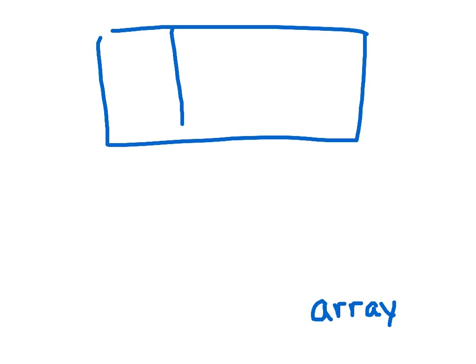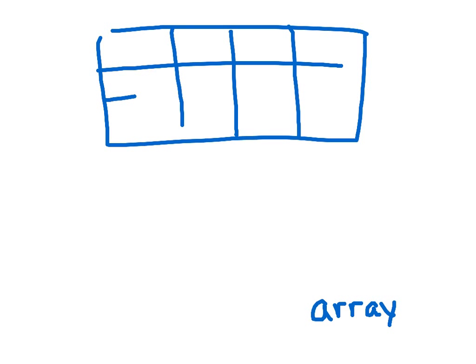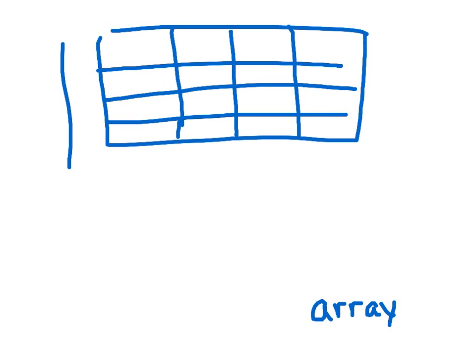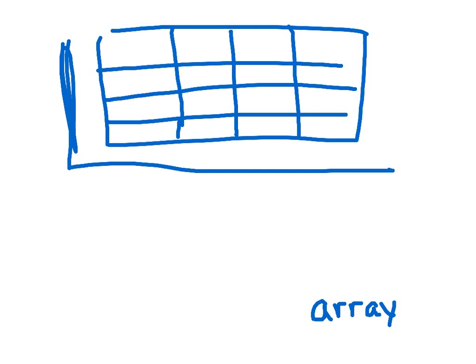Do you remember talking in past years about an array? An array is basically an arrangement of objects in equal rows and equal columns. Where do you see arrays in your classroom? Maybe the arrangement of desks or tables, the window panes, or if you look up, maybe the ceiling tiles. Thinking about arrays is going to help us with both multiplication and division when looking at rows and columns.